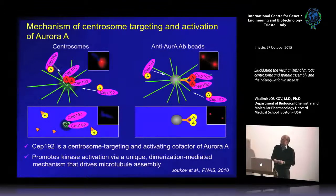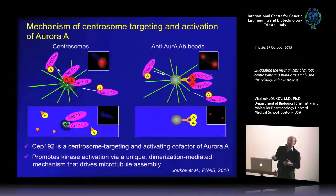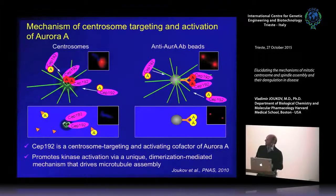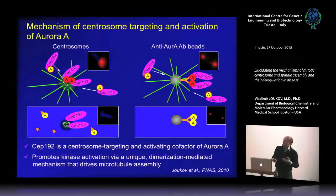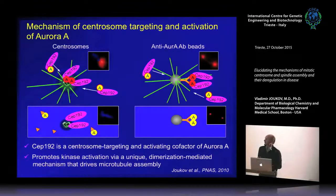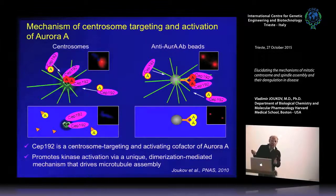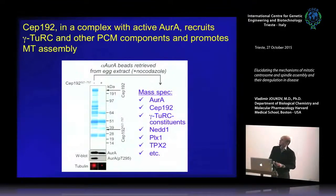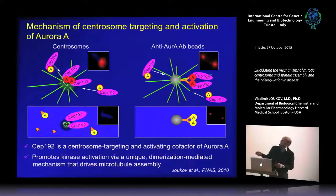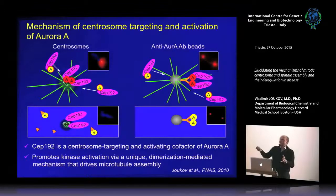This data indicates that activation of Aurora A is a Cp192-specific process — Cp192 activates the kinase via a unique mechanism that operates only at the centrosome. Because it is a centrosomal cofactor, it targets the kinase only to the centrosome, so this process can operate only at centrosomes and nowhere else. We then wanted to know how oligomerization of these complexes translates into formation of a functional microtubule organizing center, and what are the events linking Aurora A activation to microtubule assembly.